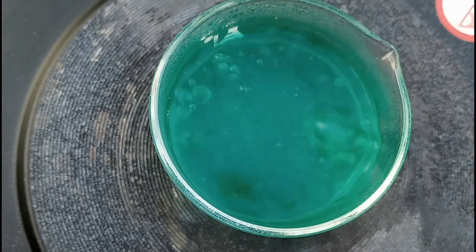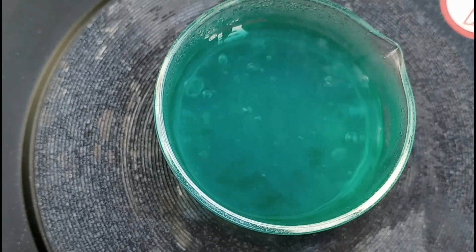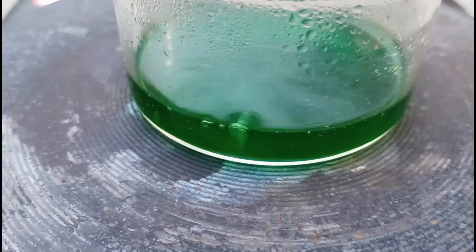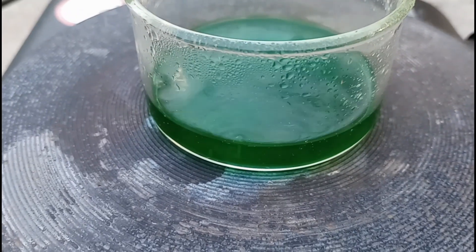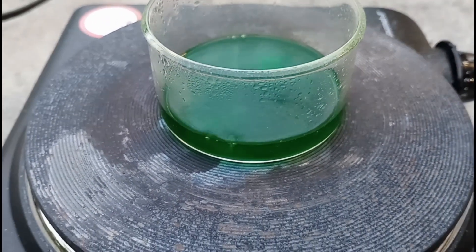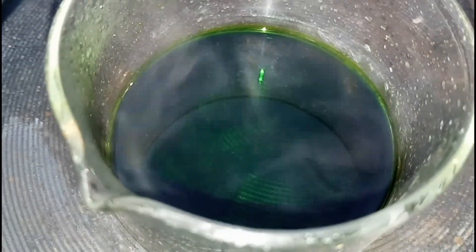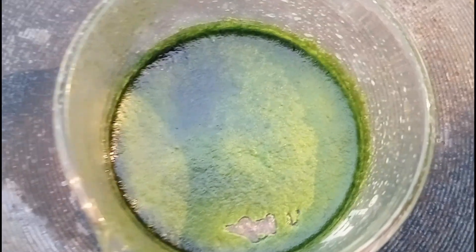As it started to reduce, it started to become a more pronounced green color, instead of the lighter blue color. Now it's almost dry, and here it's starting to crystallize.